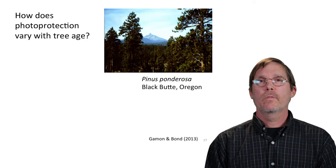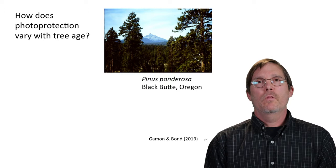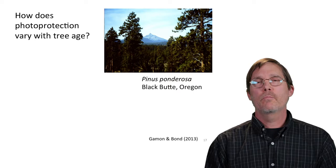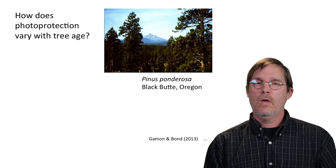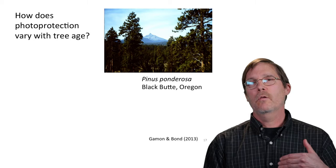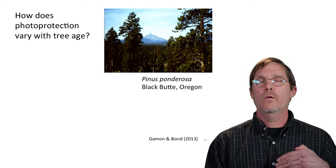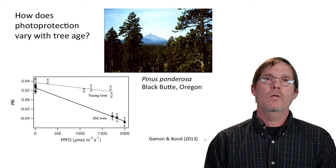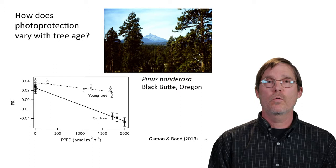Another question: going to a different biome — ponderosa pine in the Pacific Northwest — what happens with tree age? We know from work of colleagues like Barbara Bond and Mike Ryan that as trees get older they have problems with hydraulic conductance, trouble getting water to the top of the tree, and on hot summer days may experience drought stress at the top. Can we see a difference in water stress using PRI between an old and a young tree?